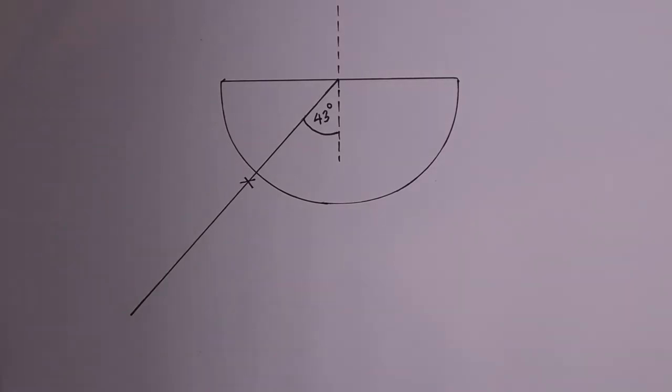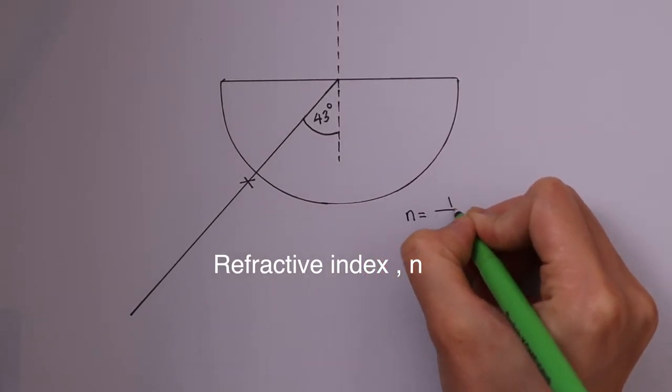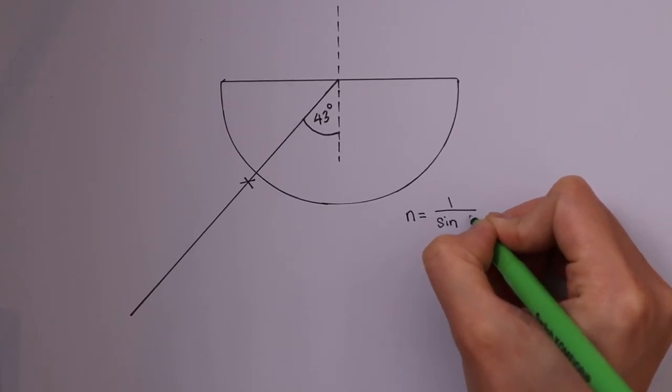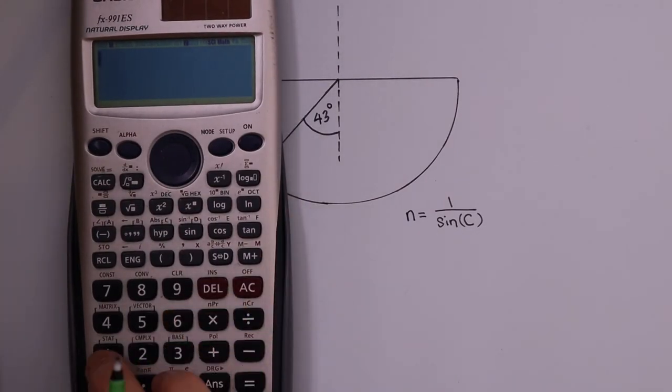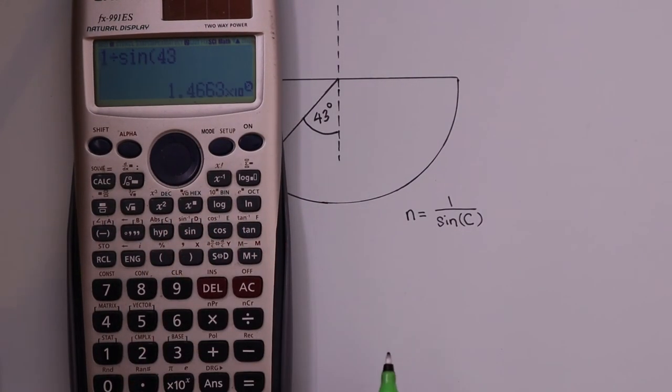Here's an extension to this experiment. Find the refractive index of perspex using this equation. Refractive index is equal to 1 divided by the sine of the critical angle. So the refractive index of perspex material is 1.5.